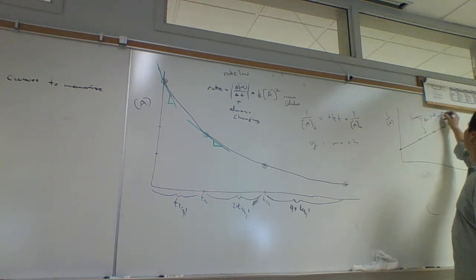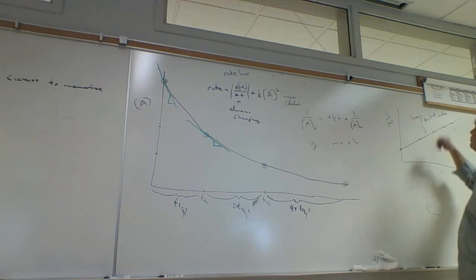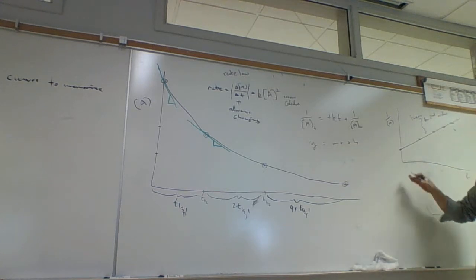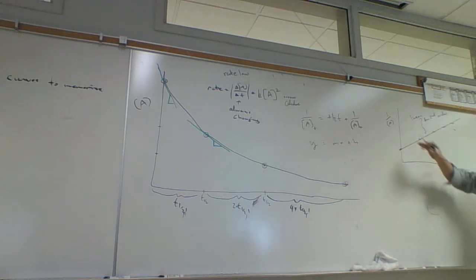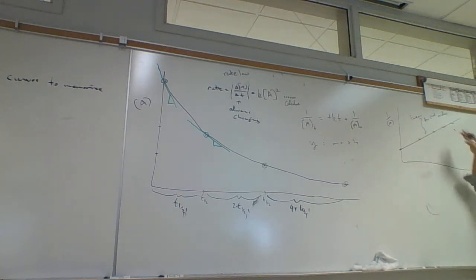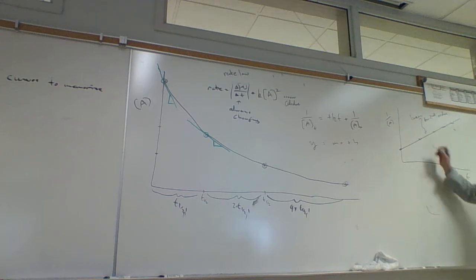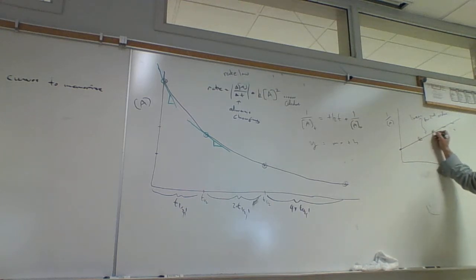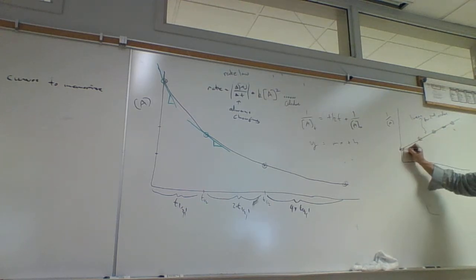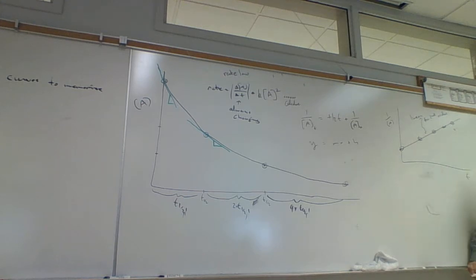The third way of recognizing second order: one, the half-life doubles each successive time; two, the rate is proportional to the square of the concentration — cut the concentration in half and the rate gets cut by a quarter; and three, if we make a plot of one over the concentration of A versus T, then we get a linear plot. It's going to be linear only for second order. If you tried to plot a first order curve this way, it would come out non-linear.